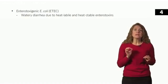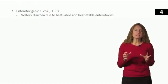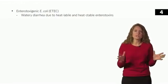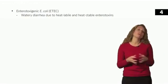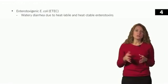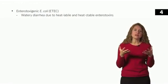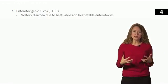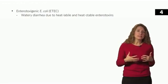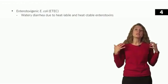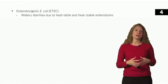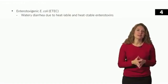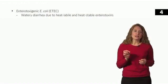The heat-labile toxin is similar to that seen with Vibrio cholerae, which results in rice-water diarrhea. The heat-labile enterotoxin works by increasing the level of cyclic AMP in intestinal cells. This causes an increase in electrolyte secretion and a decrease in electrolyte absorption, leading to a large amount of water secreted into the lumen of the intestine — watery diarrhea.